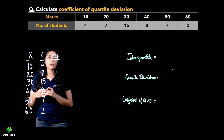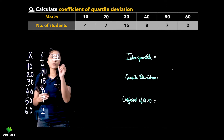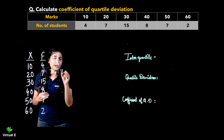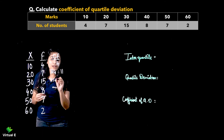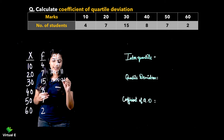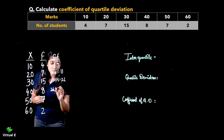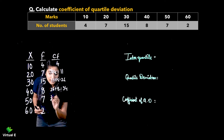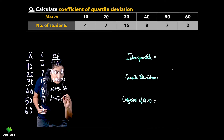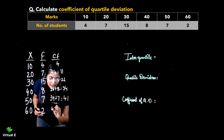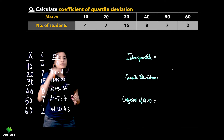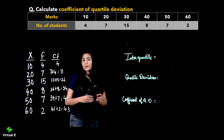Let us start by finding out cumulative frequency. The first value is 4, so it remains 4. Then 7 plus 4 gives 11. 11 plus 15 gives 26. 26 plus 8 gives 34. 34 plus 7 gives 41. And finally, 41 plus 2 gives 43. So cumulative frequency has been calculated.